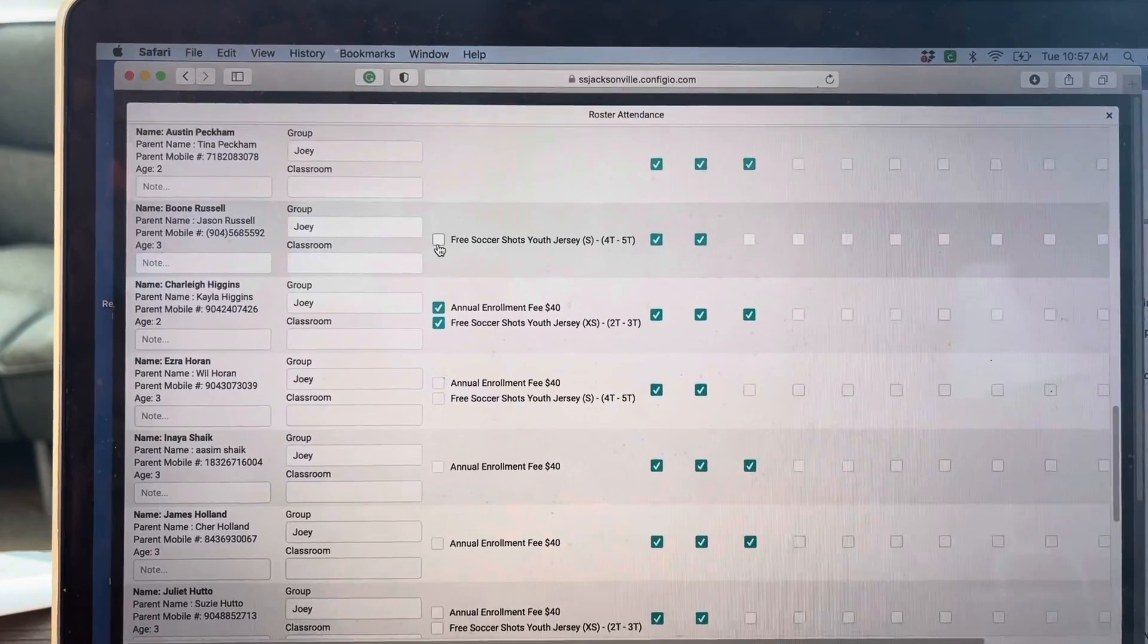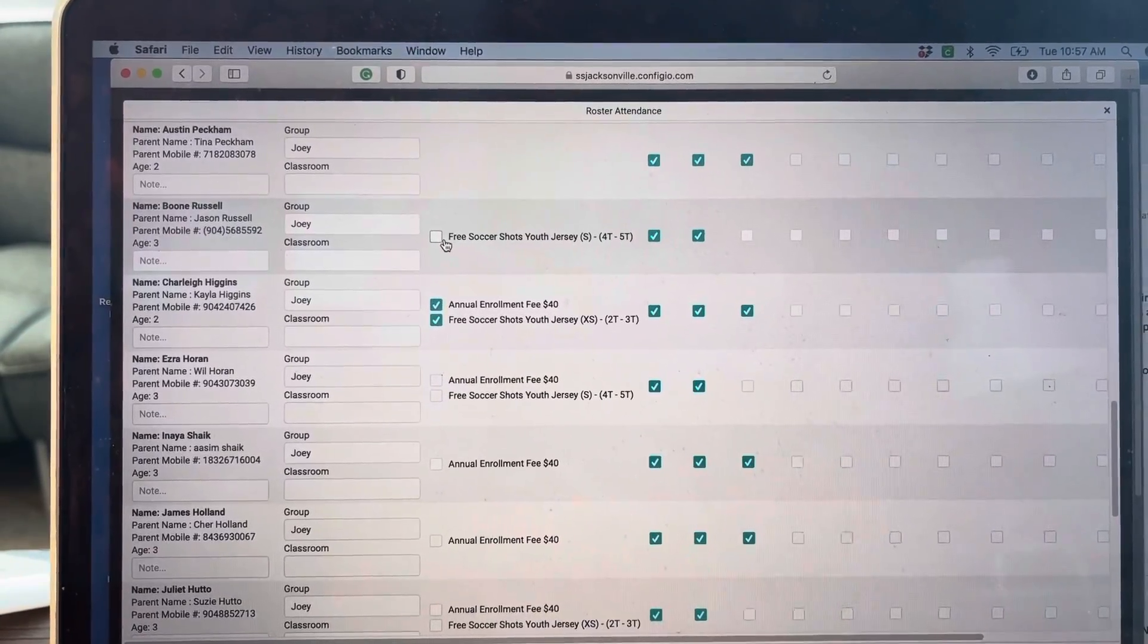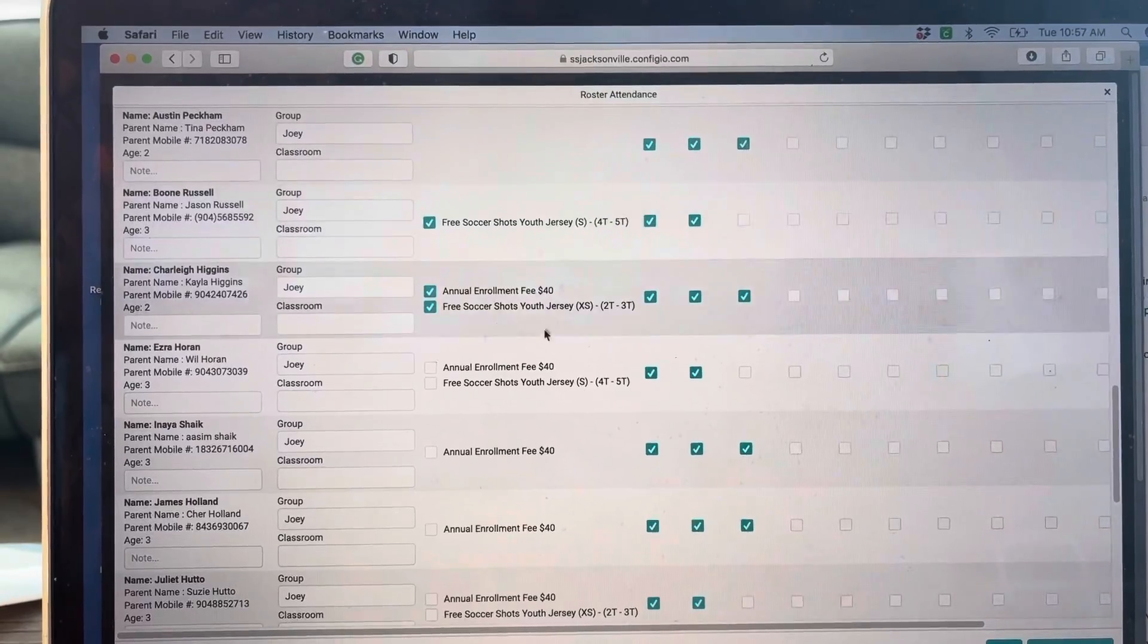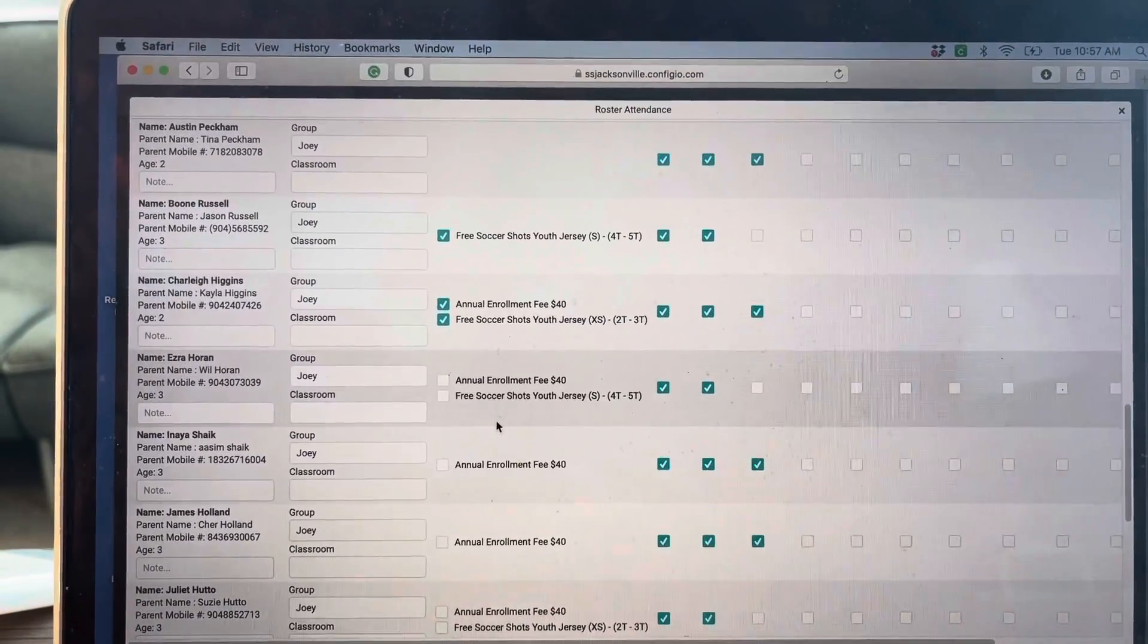The ideal situation is you click both annual enrollment fee and free Soccer Shots jersey after the player is given her jersey. Now if you have one that just has the jersey size, just click that one in, and then you have the jersey size that you gave to them.